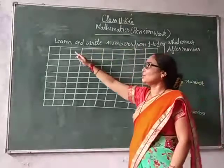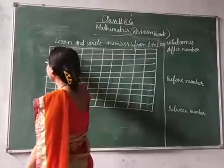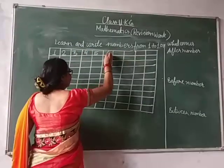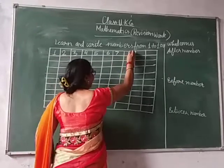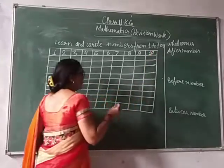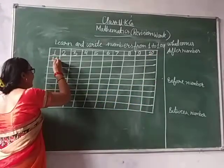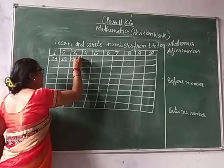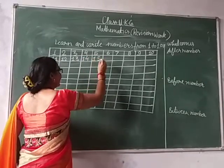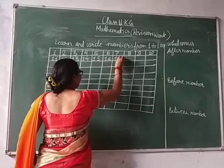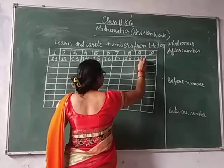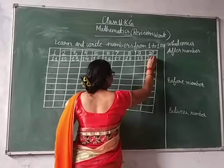Now start: one - 1, two - 2, three - 3, four - 4, five - 5, six - 6, seven - 7, eight - 8, nine - 9, ten - 10. Next: eleven - 11, twelve - 12, thirteen - 13, fourteen - 14, fifteen - 15, sixteen - 16, seventeen - 17, eighteen - 18, nineteen - 19, twenty - 20. Okay?